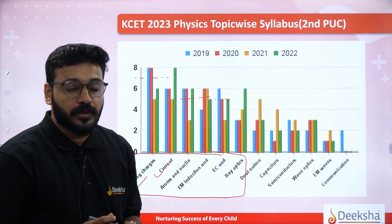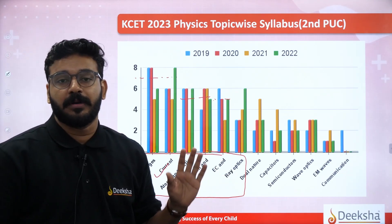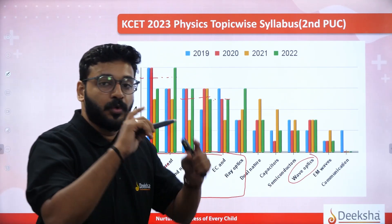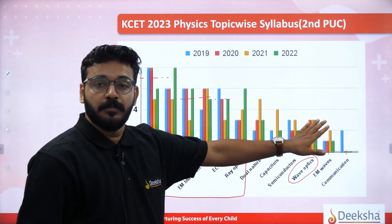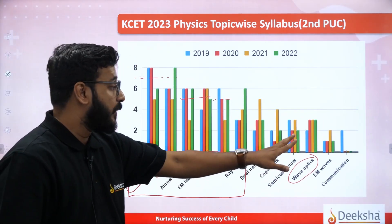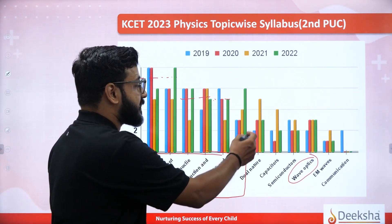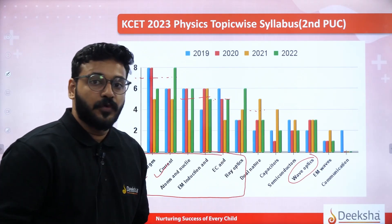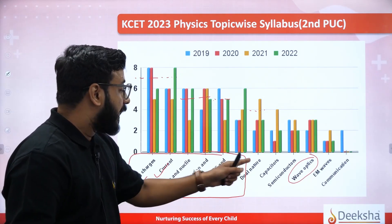Ray optics is more important — optics in complete. Try to cover ray optics and wave optics together as one unit. Wave optics is very important — every year there are many questions. In the last 3 years continuously, three questions have come. Dual nature — every year they ask approximately 4 questions on average. Dual nature is also important.